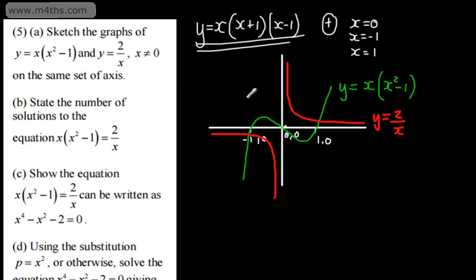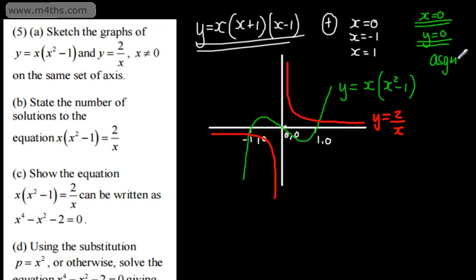So we've got y = 2/x and y = x(x² - 1) on the same axes. We're not asked to state the equations of the asymptotes of this graph, but if you were, they are x = 0 (the y-axis) and y = 0 (the x-axis) for y = 2/x. Note x ≠ 0 is defined for the reciprocal curve, not the cubic that passes through the origin.